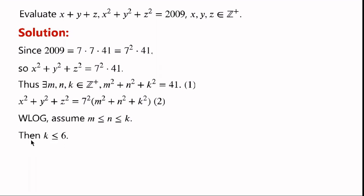Then k must be less than or equal to 6, since 7 squared equals 49, and the right-hand side of equation 1 is 41. So we know that k must be less than or equal to 6.